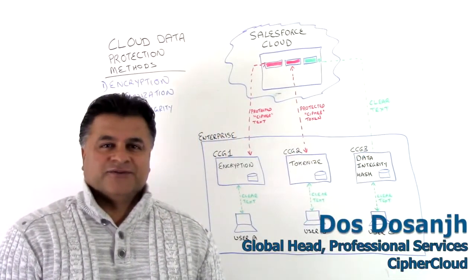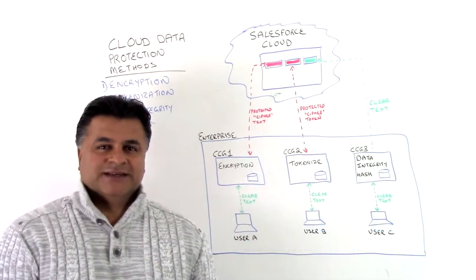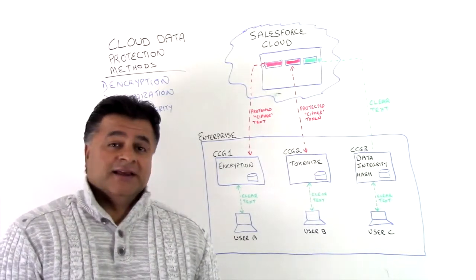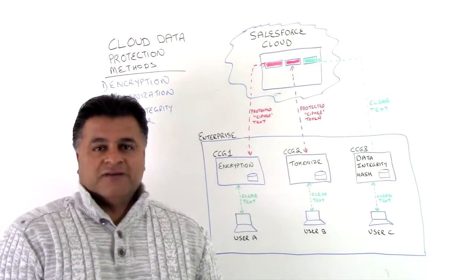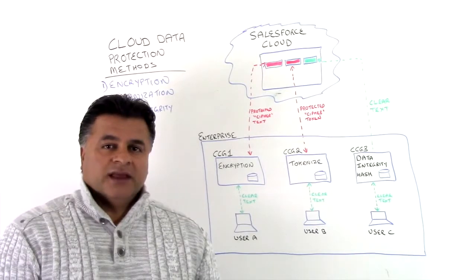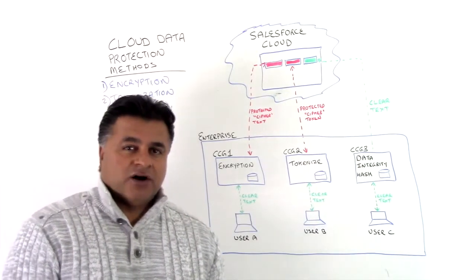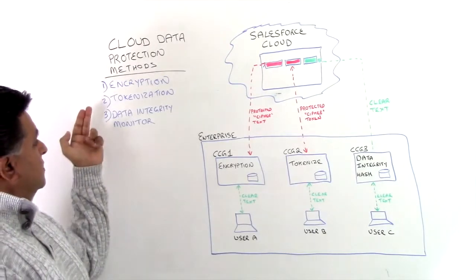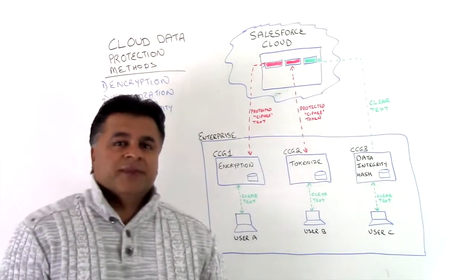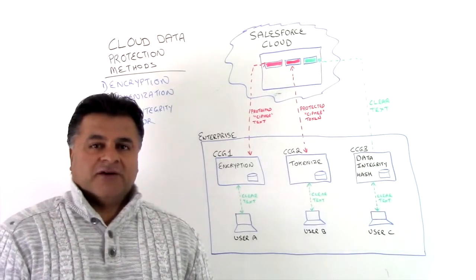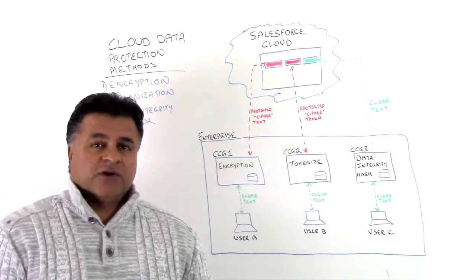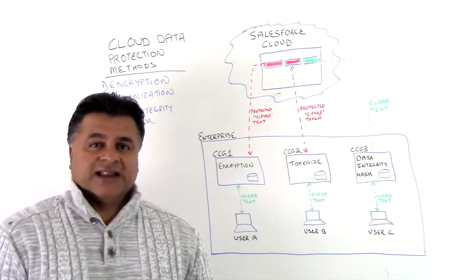Hello, this is Dostosan with Cypher Cloud Professional Services and I'm delighted to bring you another session of our Friday Chalk Talk. Today we're going to be focusing on three of our data protection methods which we utilize for our customers around the globe. Those three protection methods are encryption, tokenization, and data integrity monitor. We use a combination of these to ensure that our clients meet their security requirements as they move their information into the cloud.